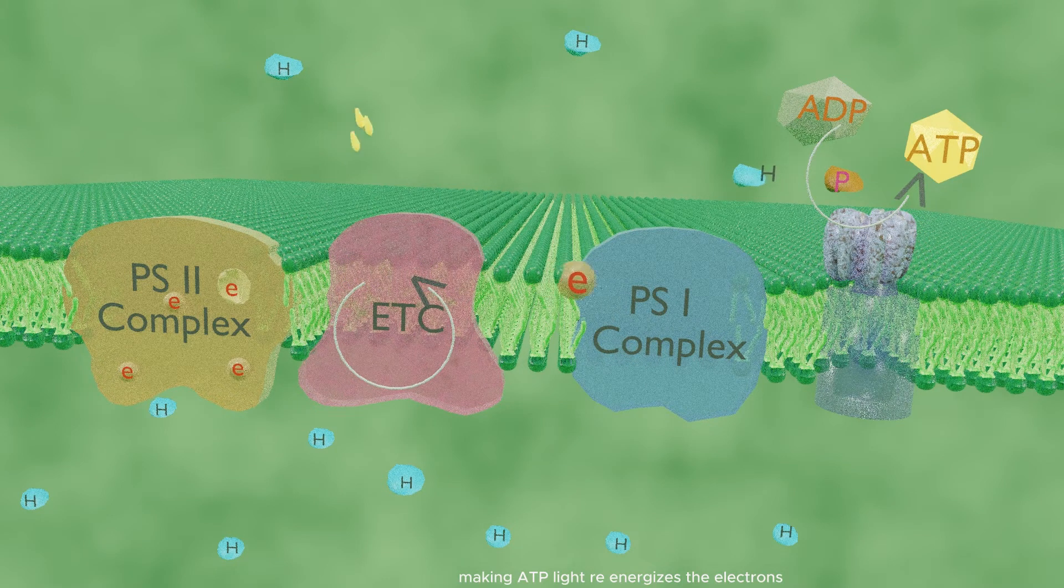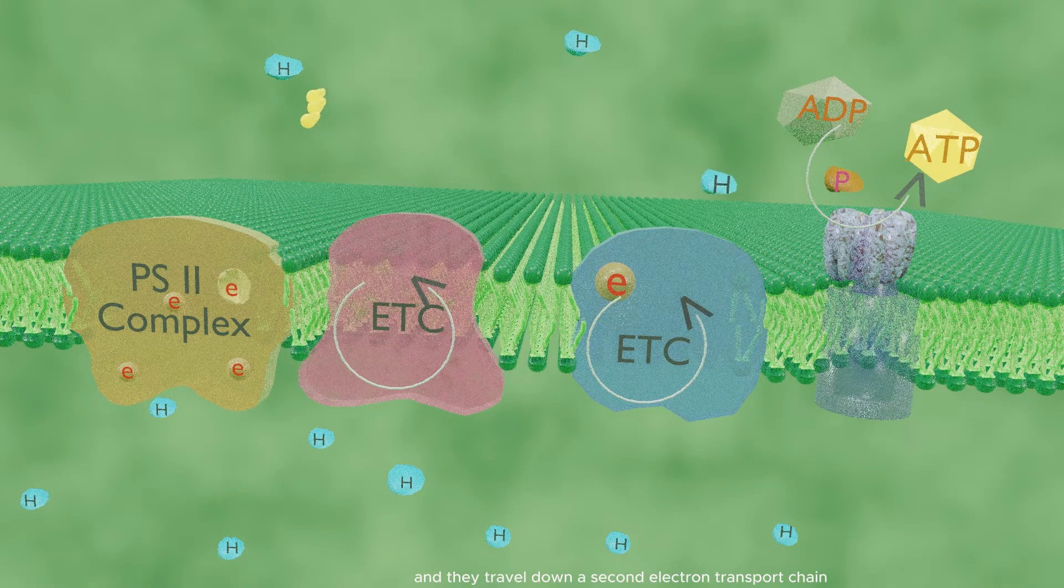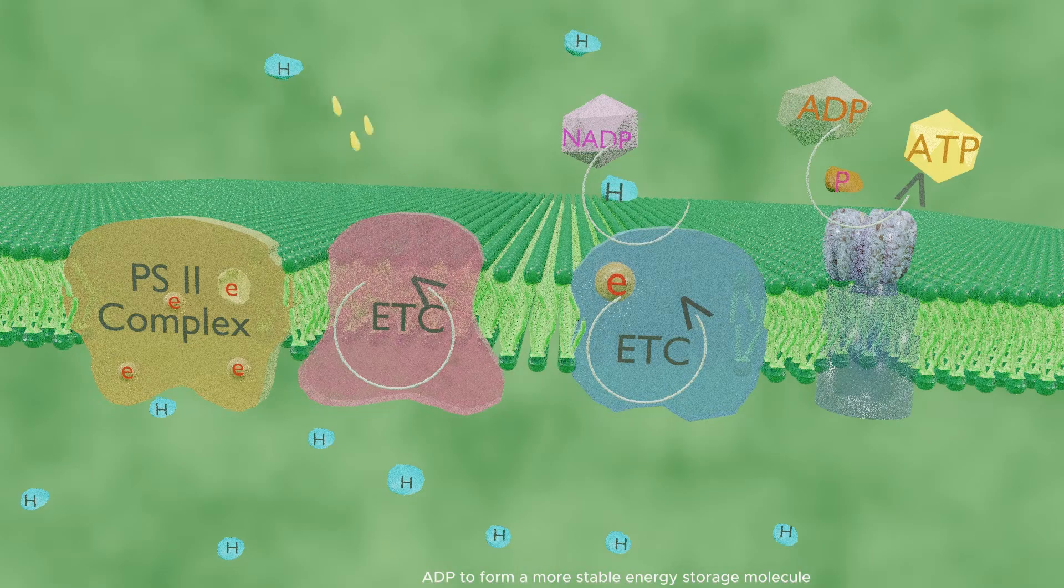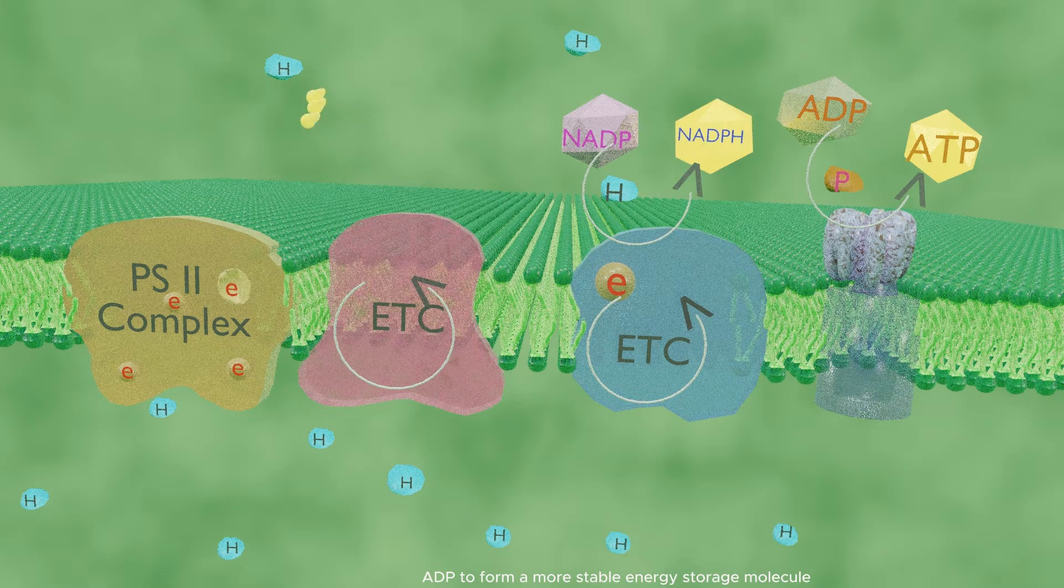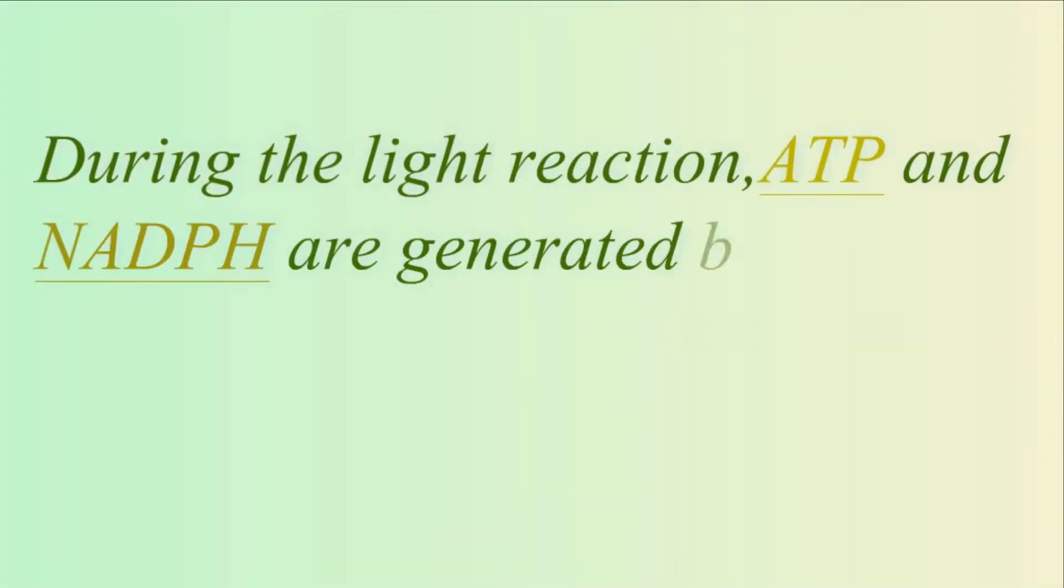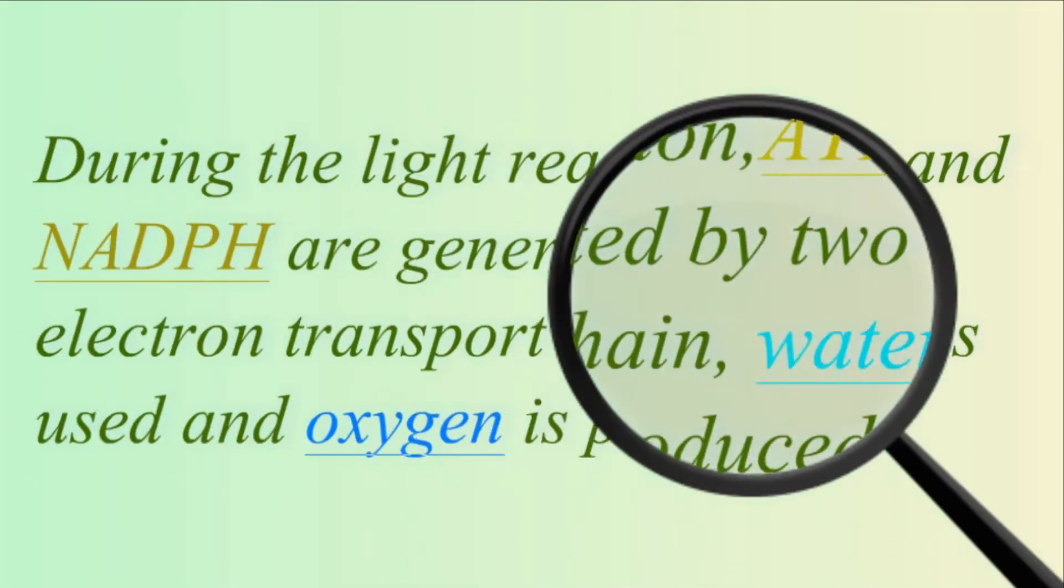Light re-energizes the electrons and they travel down a second electron transport chain, eventually bonding hydrogen ions to NADP to form a more stable energy storage molecule, NADPH. During the light reactions, ATP and NADPH are generated by two electron transport chains, water is used, and oxygen is produced.